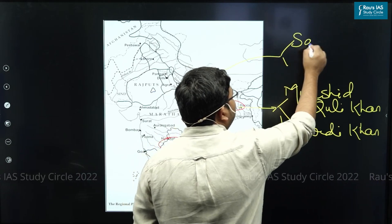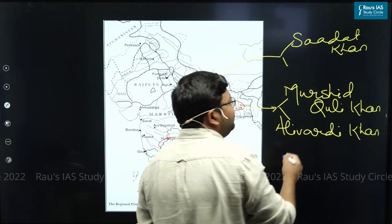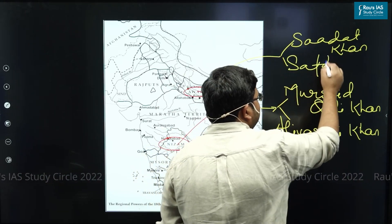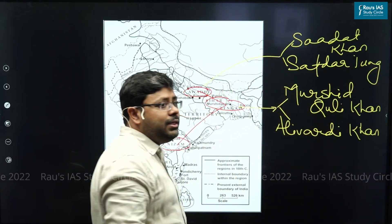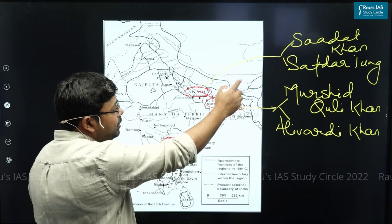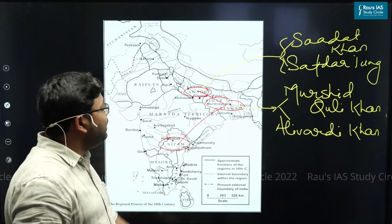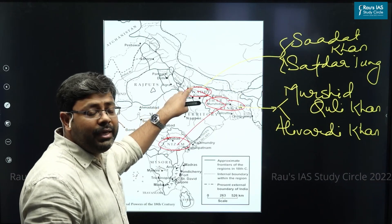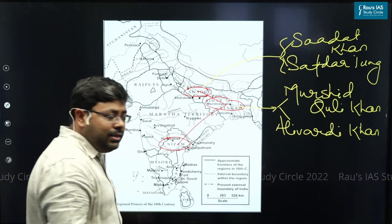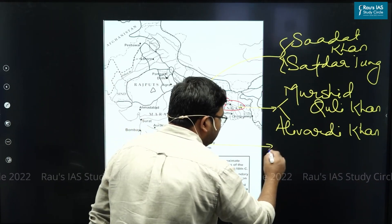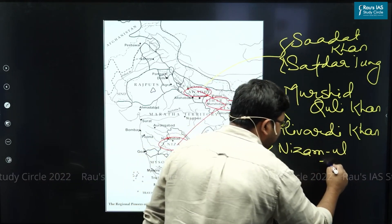The independent kingdom of Awadh was established by Sadat Khan, and later under the rule of Safdarjung it became still more prosperous. Awadh was another very prosperous kingdom because of the good rule given by Sadat Khan and Safdarjung. Lucknow became a big cultural center in India at that time.